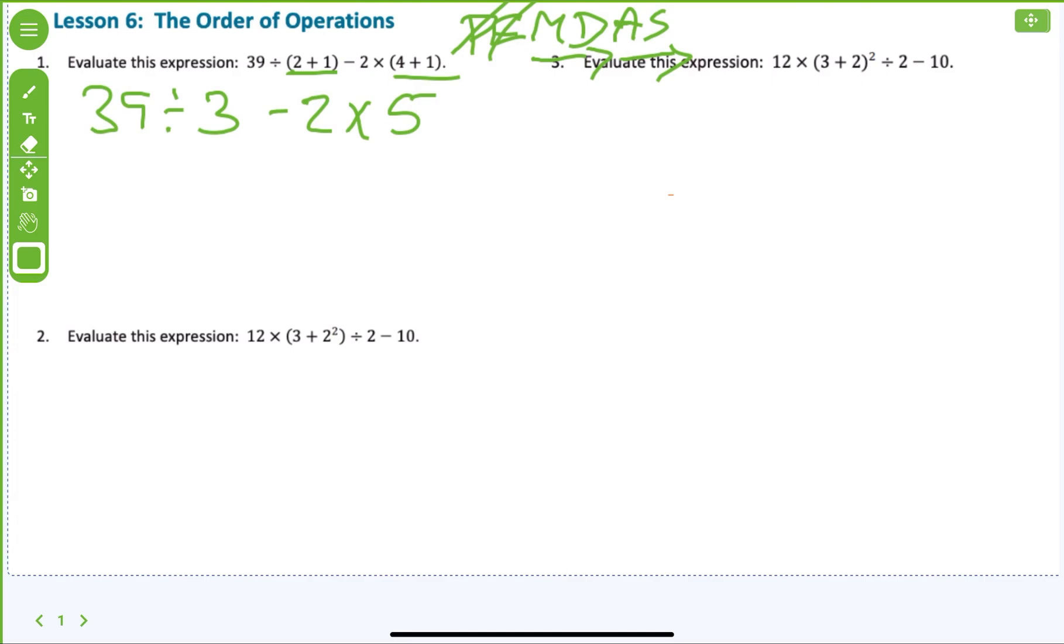There's no exponents. Now multiplication and division. What do I have? Well I have both. I have division, and then multiplication at the end. So which one am I going to do first? I'm going division first because you pair multiplication and division together and do whichever one comes first from left to right. So we're going to do 39 divided by 3 is 13 minus 2.